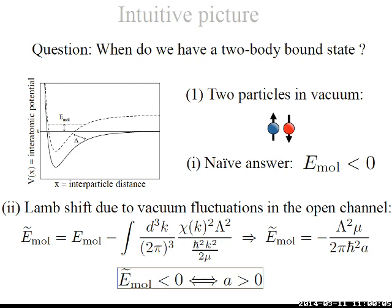The energy is reduced by the second-order process, and this depends on which side of the continuum you start from — if you start from the ground state, a second-order process can only lower the energy.